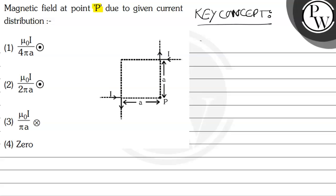The key concept for a very long current carrying wire: magnetically at any point it will be B equals mu naught I by 4 pi r, where r is the shortest distance. Sine alpha plus sine beta, where alpha is this angle and beta is this angle.